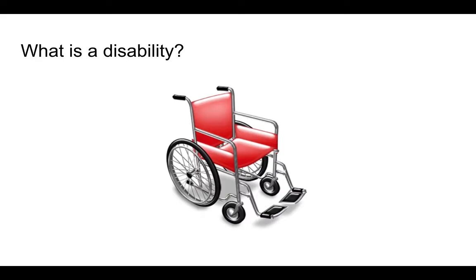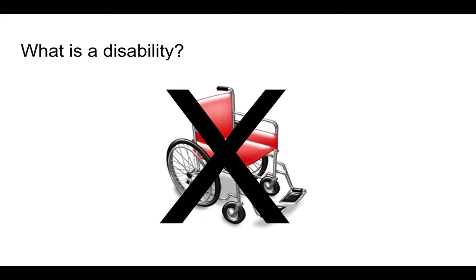Previously, disability was considered something to do with physical access. The societal model now is that we accept everybody's ability and disability as related to the person. The use of language is very important — it's not 'the disabled person' but 'the person with a disability.' We use a person-centric approach because what we value most is that they're a person. In fact, less than 8% of recorded disabilities are actually to do with a physical impairment such as needing to use a wheelchair.